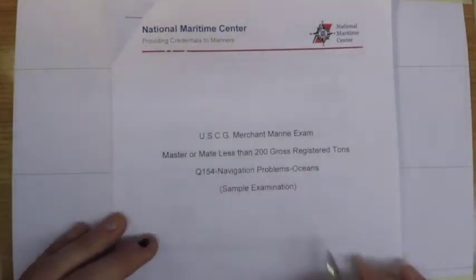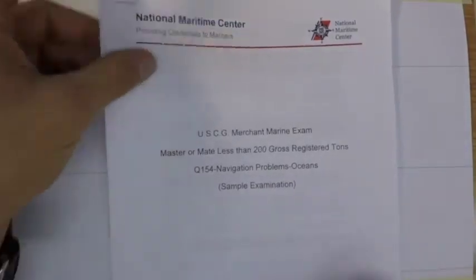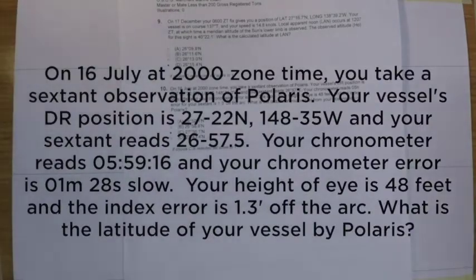Welcome to the final problem in our 200-ton oceans nav problem sample exam. This is a Polaris problem. On 16 July at 2000 zone time you observe Polaris. Your DR position is latitude longitude.